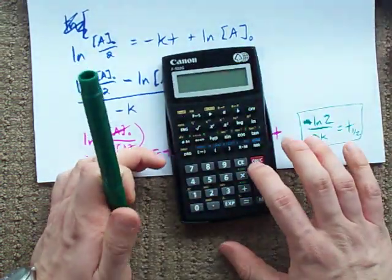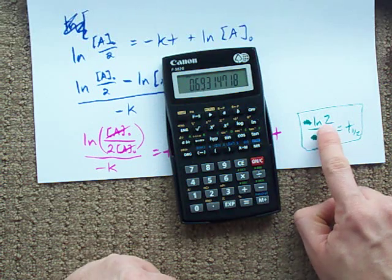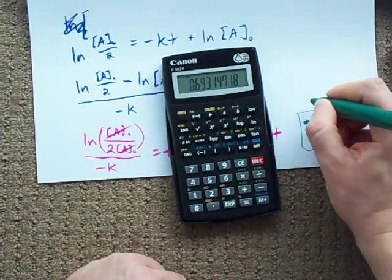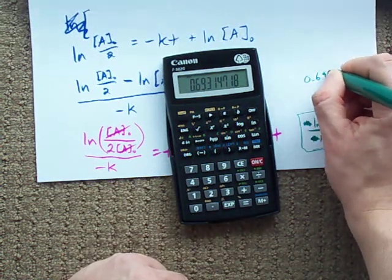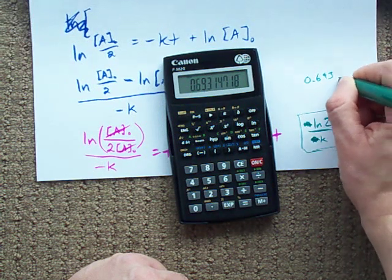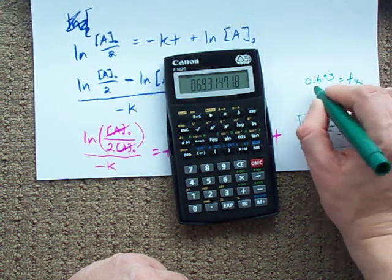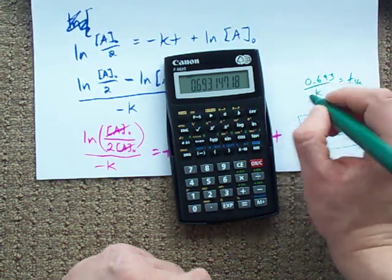Some teachers will even give it to you and say that ln 2 is 0.693. And so, the half-life of a first-order reaction is just 0.693 divided by k.